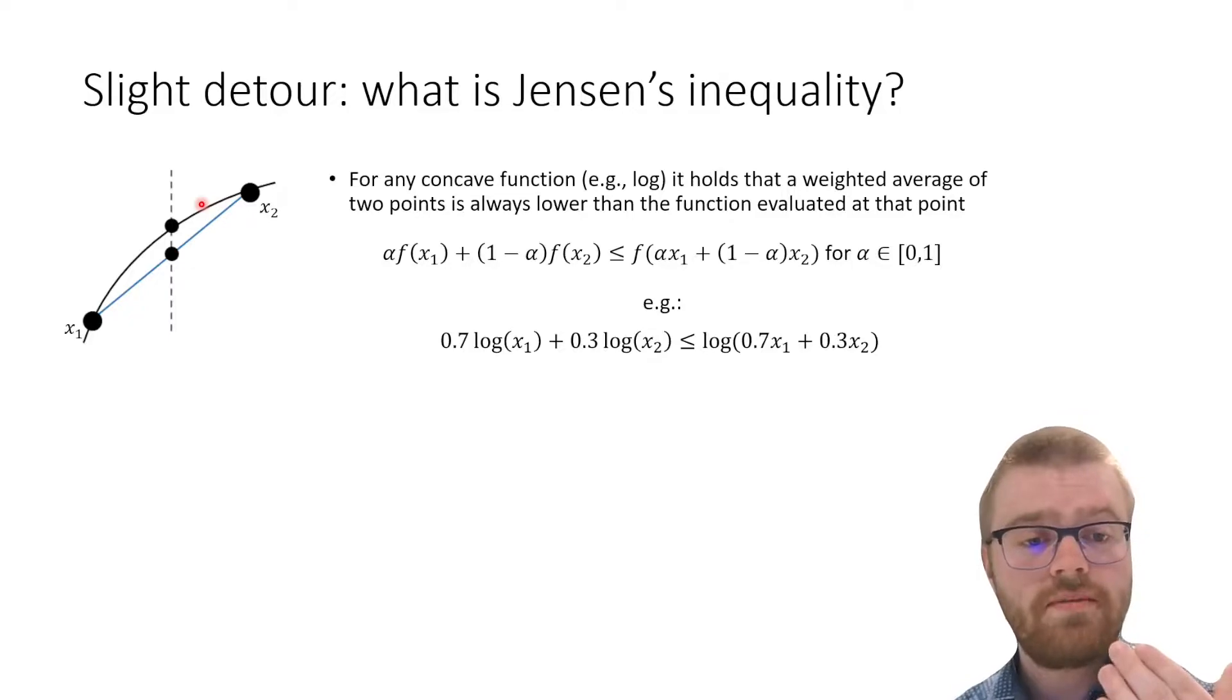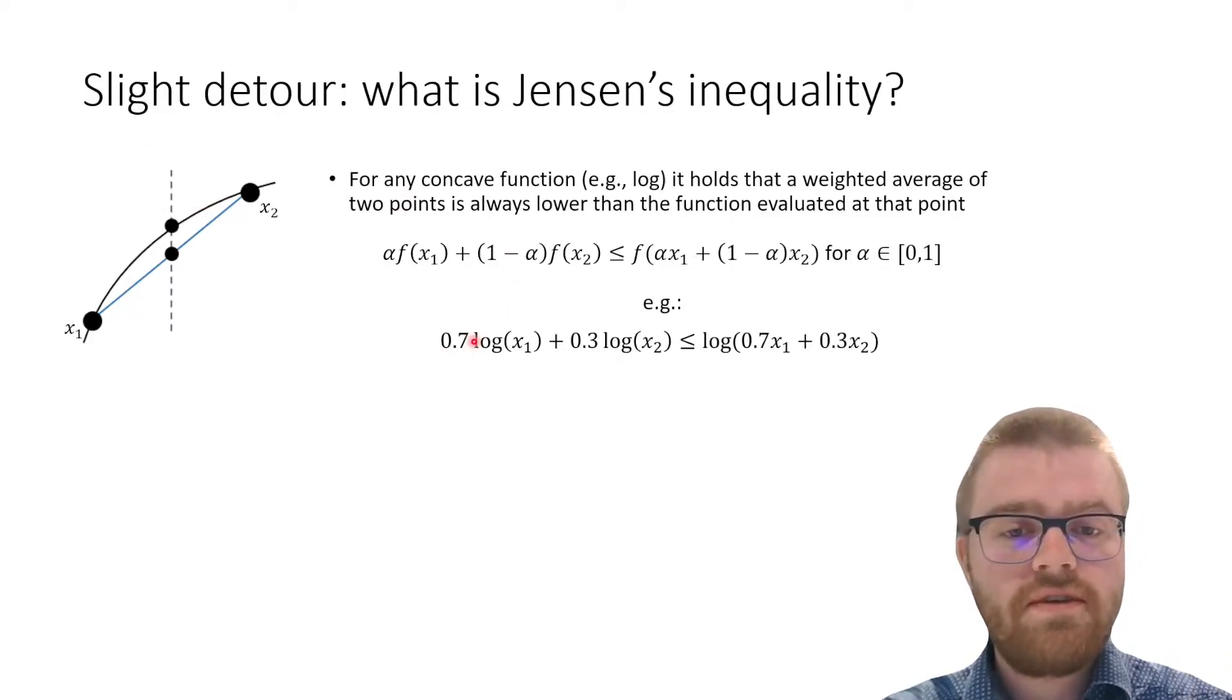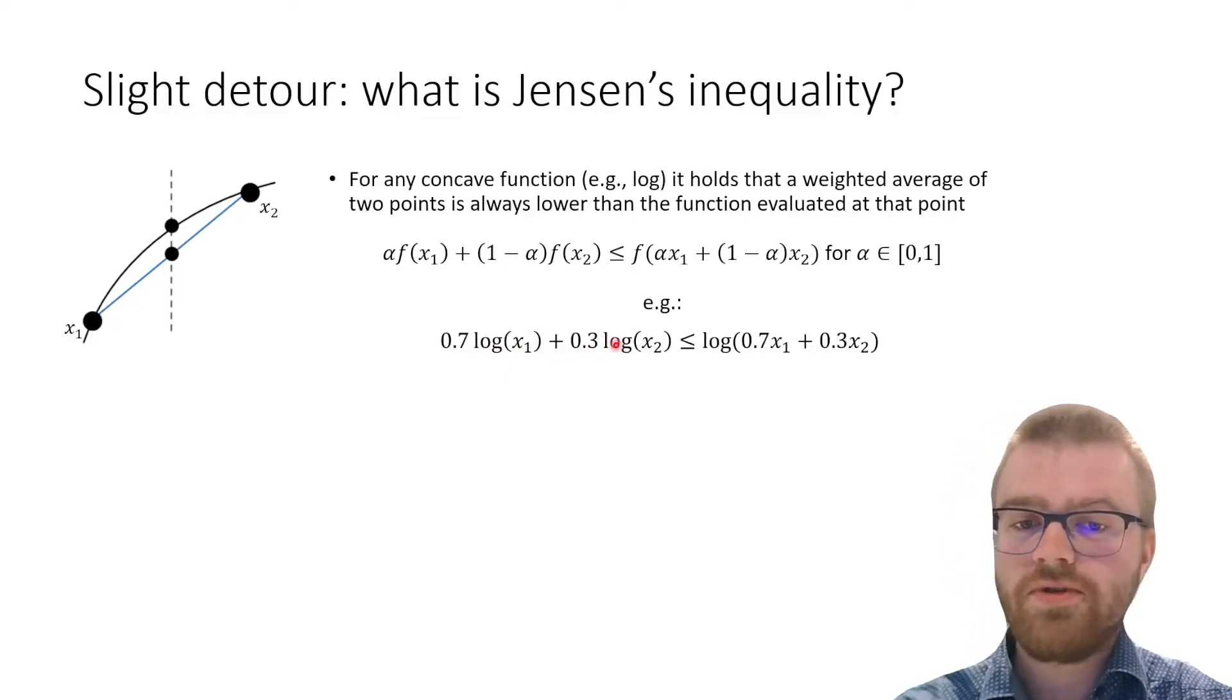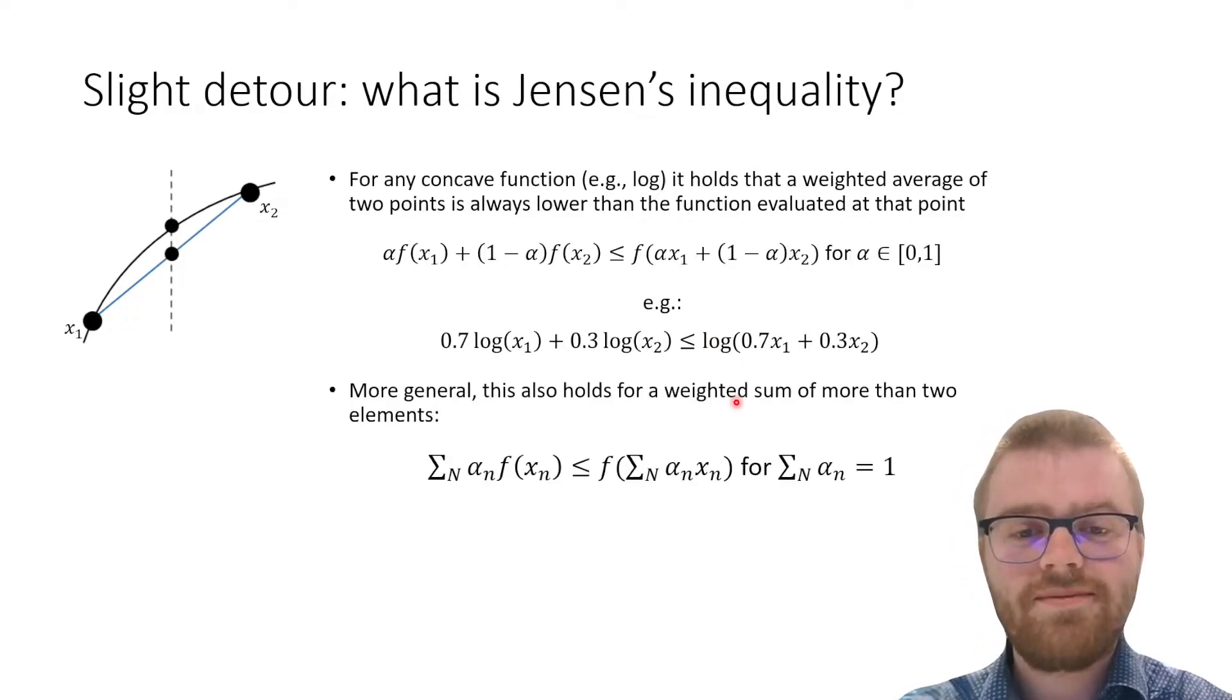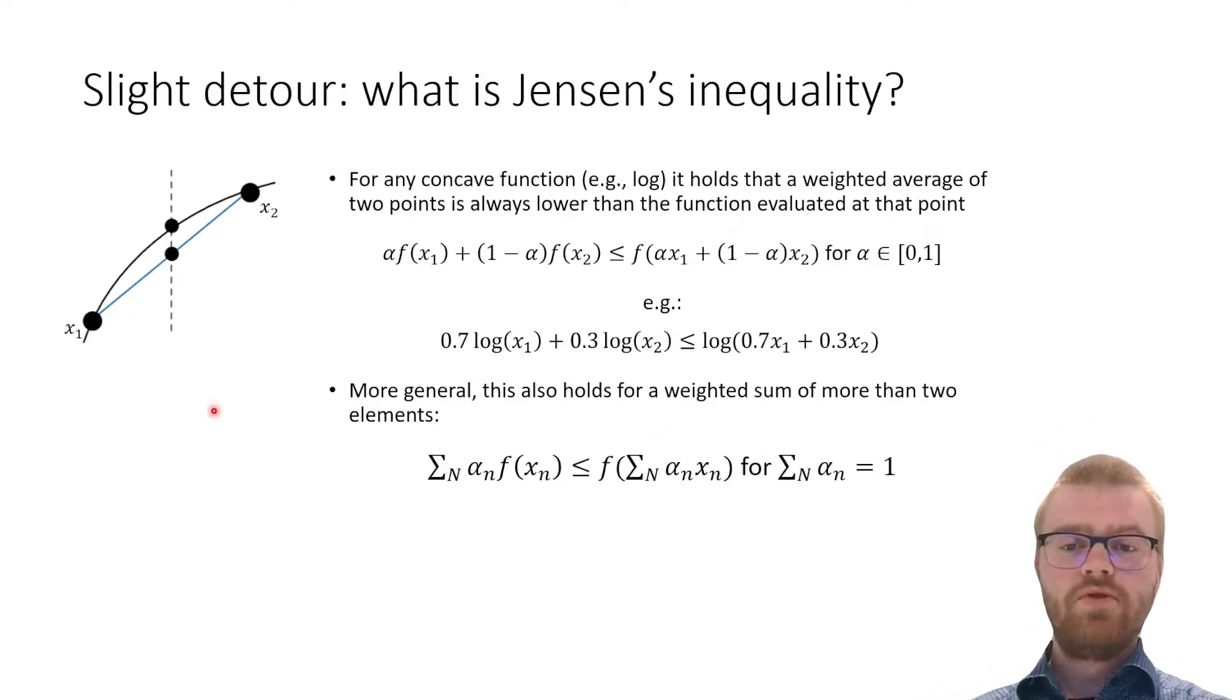A logarithm is a concave function. So for example, 0.7 times a logarithm plus 0.3 times a logarithm is always going to be smaller than this summation inside this logarithm. And more generally, this does not even hold for two points on the logarithm, but any weighted sum of points on this logarithm.